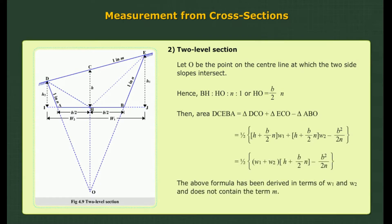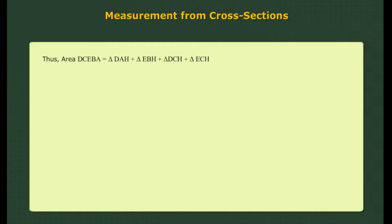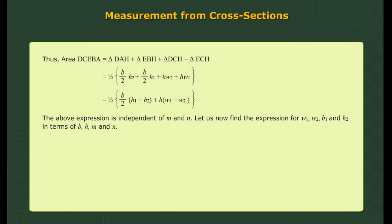The above formula has been derived in terms of W1 and W2 and does not contain the term M. The formula can also be expressed in terms of H1 and H2. The above expression is independent of M and N. Let us now find the expression for W1, W2, H1 and H2 in terms of B, H, M and N.